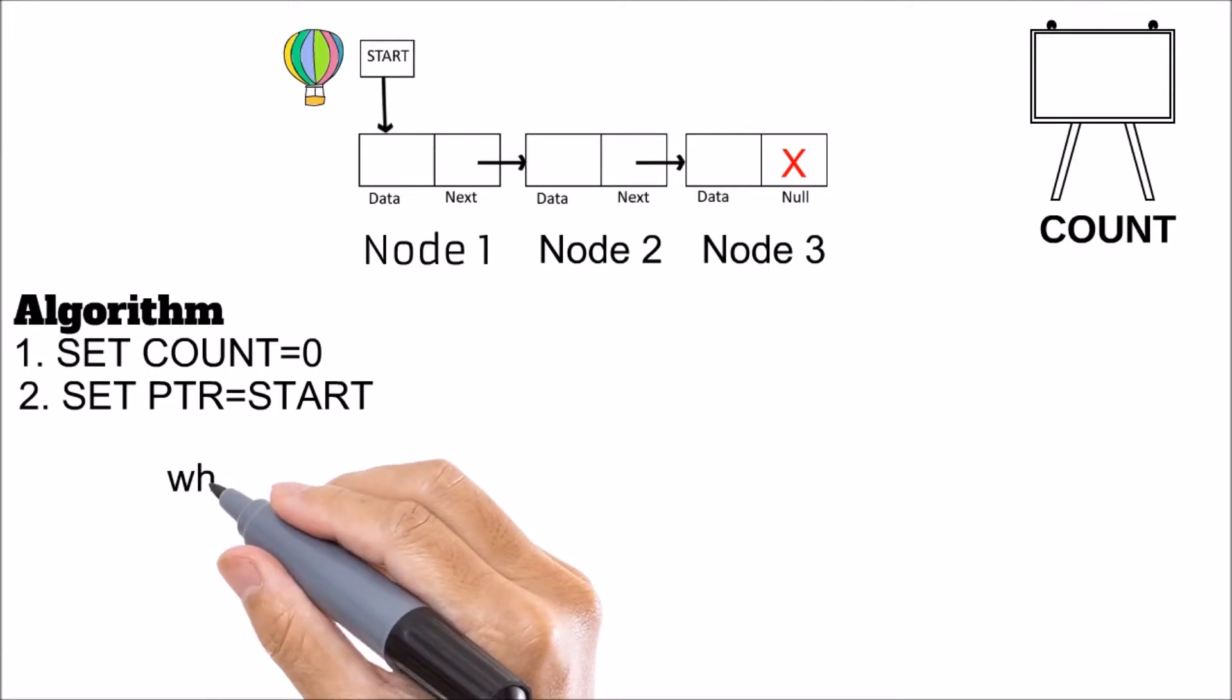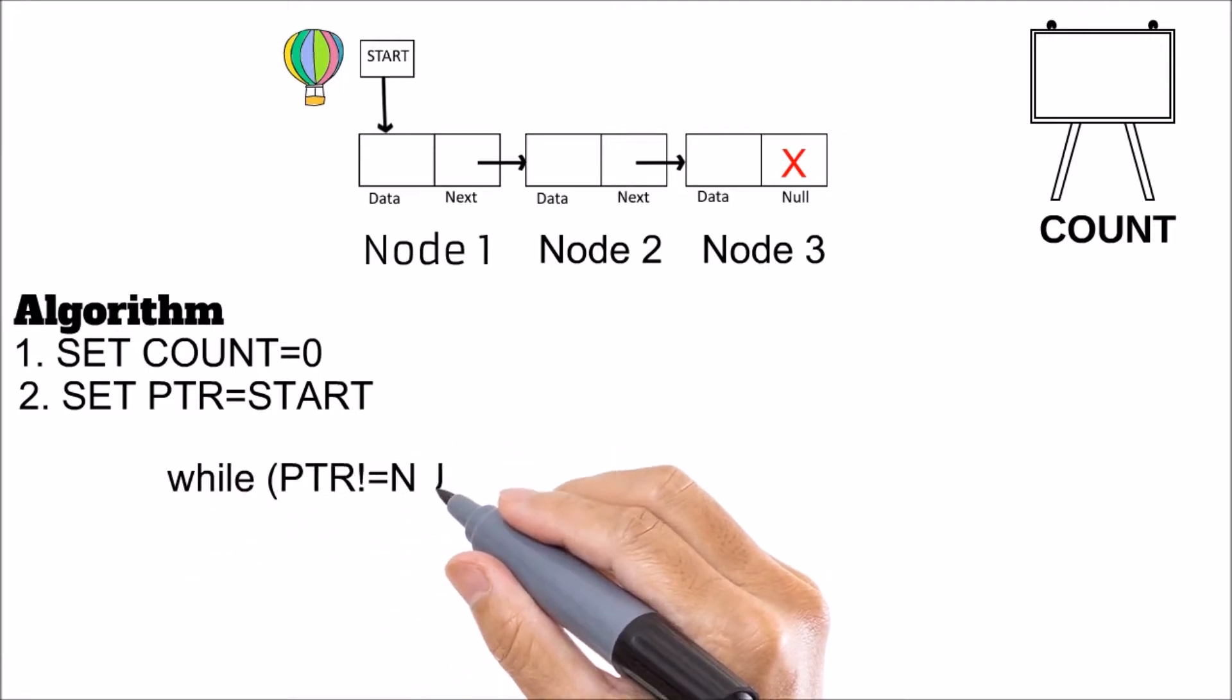Now you remember from my previous video that we are taking a pointer or a hot air balloon and we are initializing it in start. Now we run a while loop because we need to traverse each element, each node, in order to get the count.